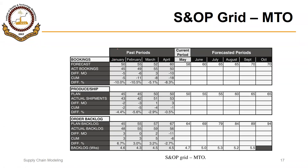Welcome back. In this segment, we will discuss the S&OP grid for a make-to-order production environment. This grid looks very similar to a make-to-stock production environment, but some of the entries and calculations are definitely different.